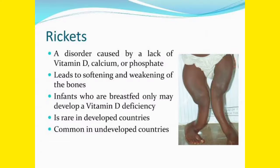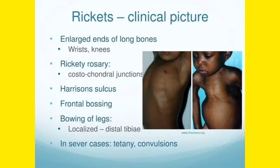Clinical features of rickets include enlarged ends of long bones. You will find the wrist and knees enlarged. Another feature is rickety rosary, which is the widening of the costochondral junction — the junction between the ribs and cartilage — and this is known as rickety rosary.